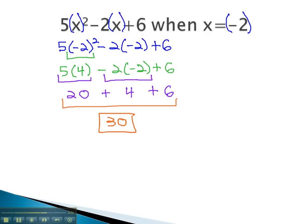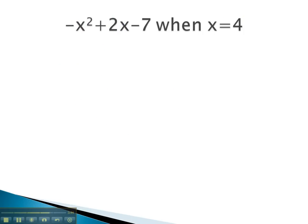This polynomial equals 30 when x is negative 2. Let's try one more example, where we evaluate a polynomial when we know the value of the variable. In this expression, we know the variable x is equal to 4.